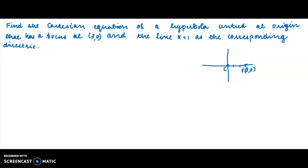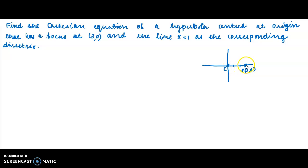Here we have a hyperbola — its focus and corresponding directrix are given. We have to find the equation of the hyperbola. The question is: find the Cartesian equation of a hyperbola centered at the origin that has a focus at (3, 0) and the line x = 1 as the corresponding directrix. Center is at the origin, focus is at (3, 0), and the corresponding directrix is x = 1.